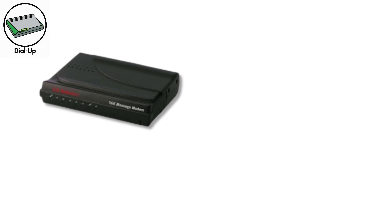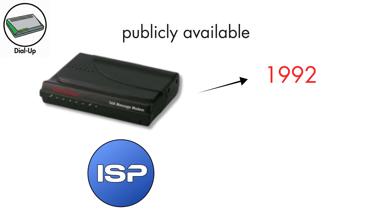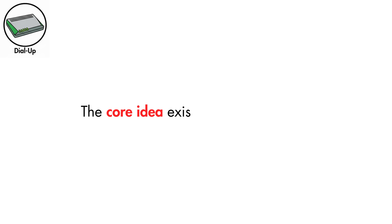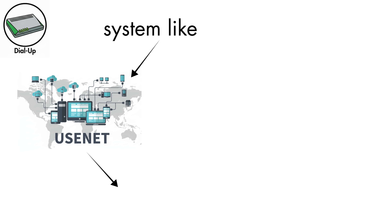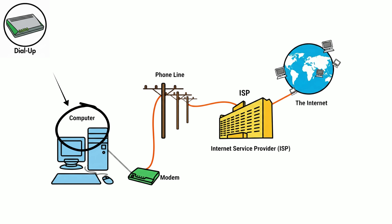Dial-Up Internet became publicly available in 1992, when ISPs in the US and UK first offered it to consumers. The core idea existed long before that, with systems like Usernet from 1979, but 1992 was when regular people could finally get online from home.